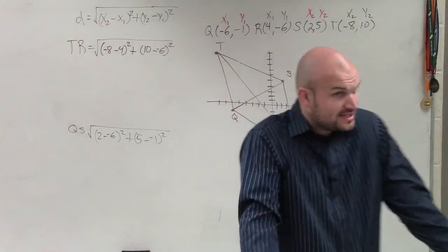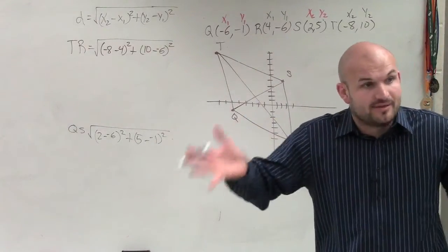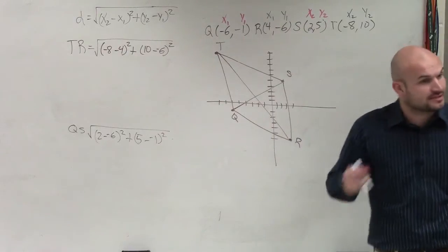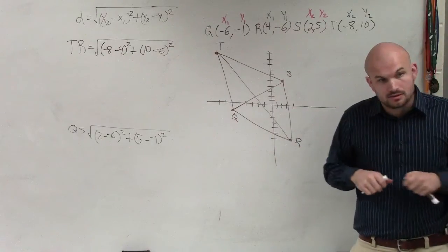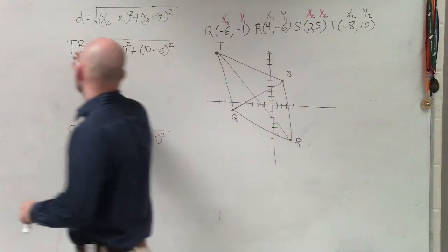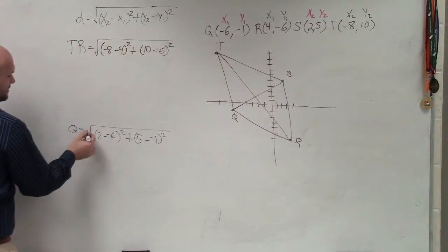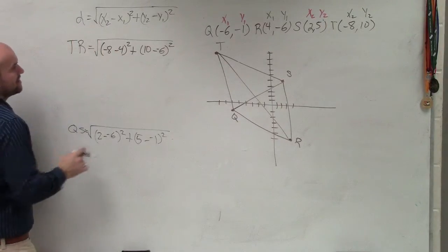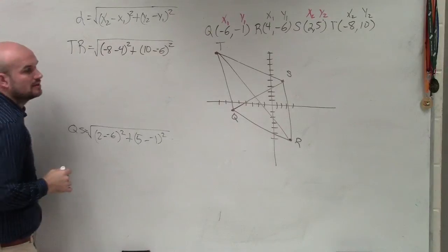So again, all we need to do is determine are these equal or not. If they're equal, it could be a rectangle or a square. If they're not equal, it has to be a rhombus. Yes? Why is that equal to 10 equals 6? That's the distance. The distance of TR is equal to that. The distance of QS is equal to that. Oh, that's minus a negative. Oh, OK.